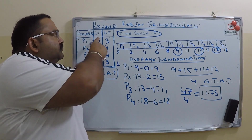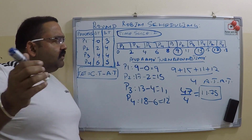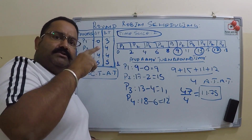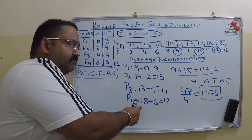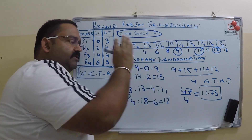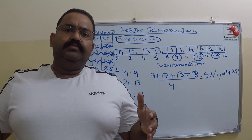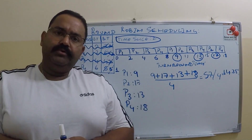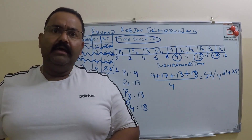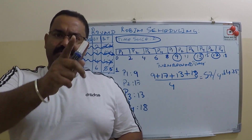In this example, all processes arrived at different times: 0, 2, 4, and 6. If all processes had arrived at time 0, the arrival time would be 0 for all, and you would simply use the completion times to calculate average turnaround time. I hope that was clear — thanks for watching, please subscribe, and stay tuned.